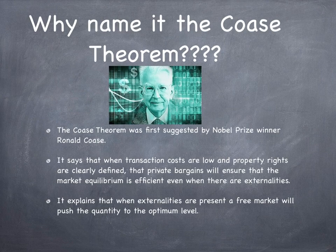The Coase Theorem was first suggested by Nobel Prize winner Ronald Coase. It says that when transaction costs are low and property rights are clearly defined, private bargains will ensure that the market equilibrium is efficient even when there are externalities.